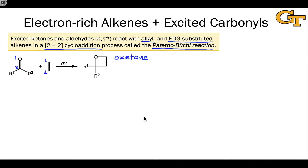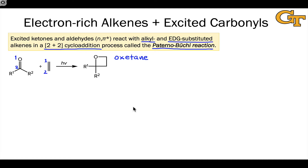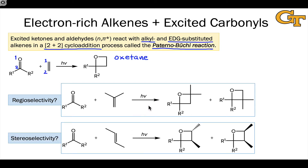We're interested in the mechanism of this process for two broader reasons. First, we want to be able to predict regioselectivity. If we take an alkene that is differentially substituted on its two ends, we could end up with two possible constitutional isomers or regioisomers, and understanding the mechanism allows us to make general predictions. Second, we're interested in the stereochemical course — in particular whether the reaction proceeds stereospecifically and, if not, what the product distribution of diastereomers looks like.